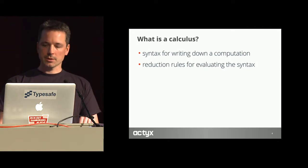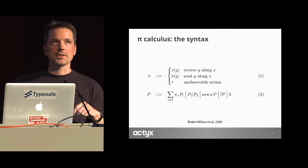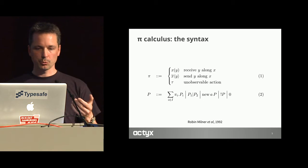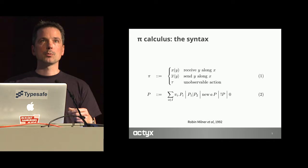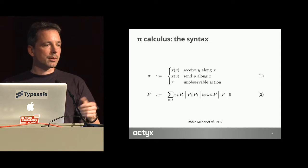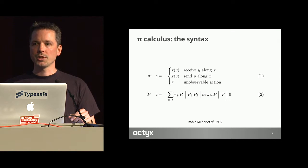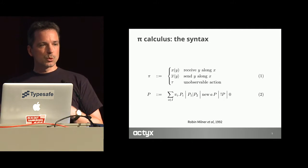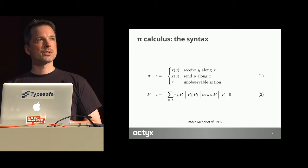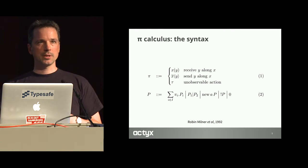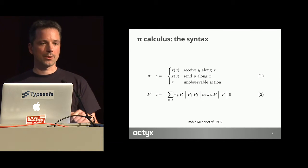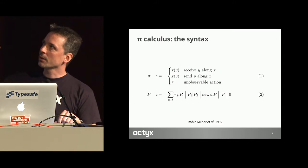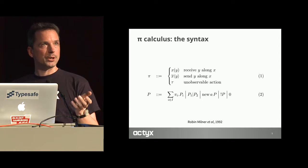The pi calculus has its roots in the Calculus for Communicating Systems (CCS) that Robin Milner developed around 1980. Tony Hoare did around the same time the Communicating Sequential Processes (CSP). The pi calculus improves over CCS in that you can send channels — communication channels — as parameters, as values. The syntax has primitive actions denoted by pi, and there are only three of them.